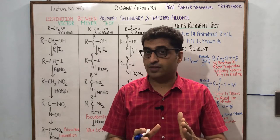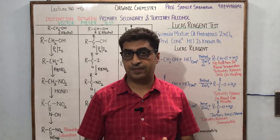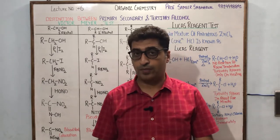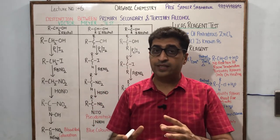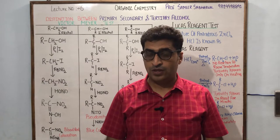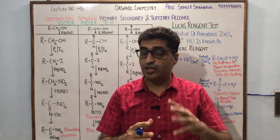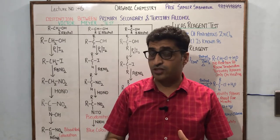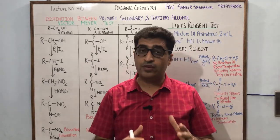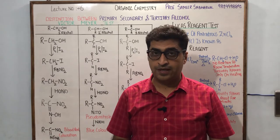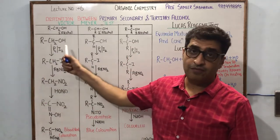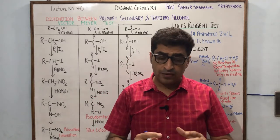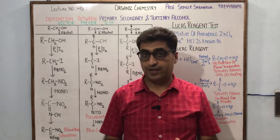Phosphorus reacts with iodine to give us PI3. Nucleophilic substitution reaction in case of alcohols is less favorable because OH negative is not a very good leaving group — it is a strong nucleophile, so it is difficult to replace. But with PI3 it is favorable; PI3 replaces OH negative with I negative to get iodoalkanes. So treating RCH2OH with phosphorus iodine we get RCH2I.